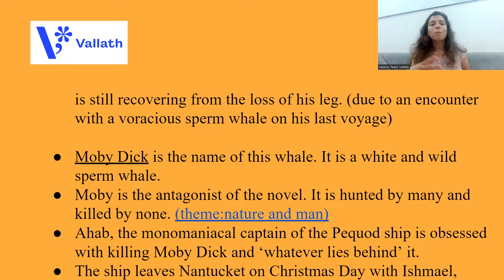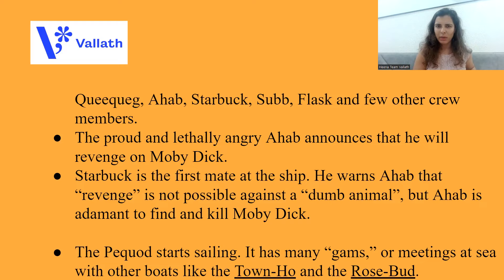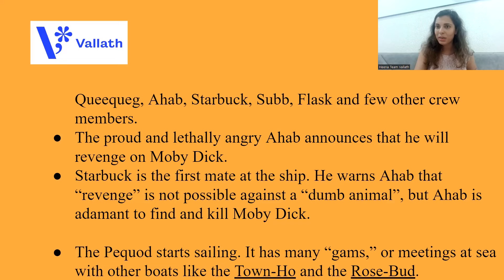The ship Pequod leaves Nantucket on Christmas Day with Ishmael, Queequeg, Ahab, Starbuck, Stub, Flask, and a few other crew members on board. When the ship has started sailing, the proud and lethally angry Ahab announces that he will take revenge on Moby Dick. Starbuck is the first mate of the ship — a matured and practical man. He warns Ahab that revenge is not possible against a dumb animal, but Ahab is adamant that he will find and kill Moby Dick.